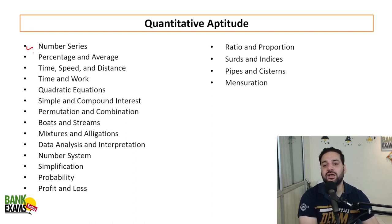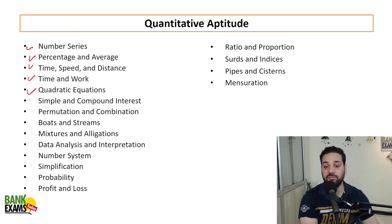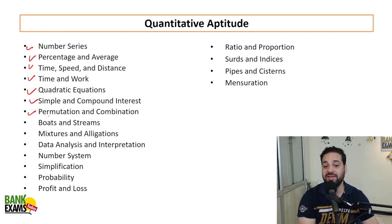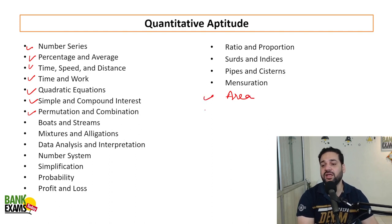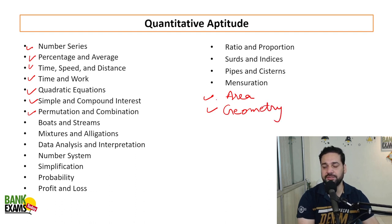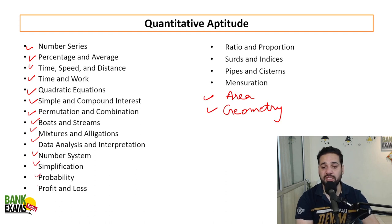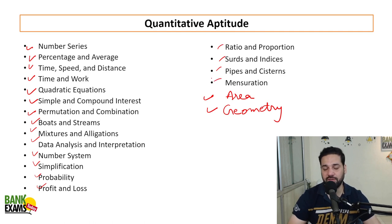For Quantitative Aptitude, the topics include number series, percentages, averages, time-speed-distance, time and work, quadratic equations, simple and compound interest, permutation and combination, probability, area, pipes and cisterns, basics of geometry, boats and streams, mixtures and alligations, data interpretation, number system, simplification, profit and loss, ratio and proportion, indices, and mensuration.